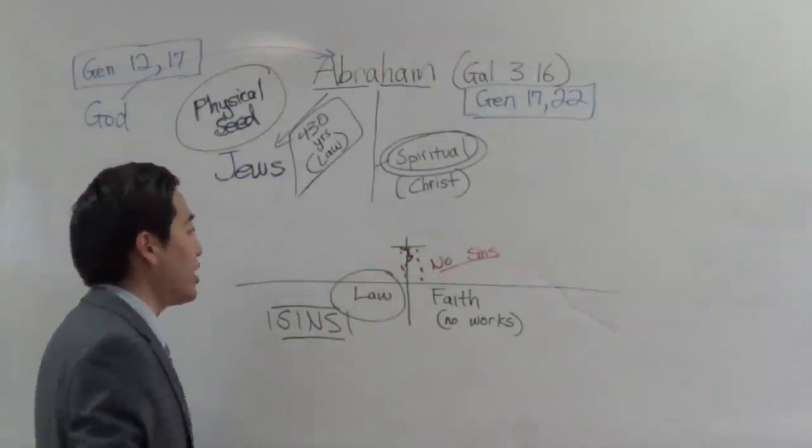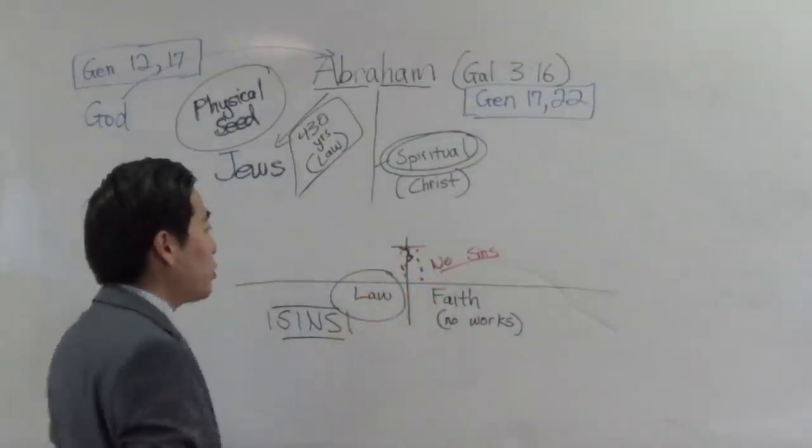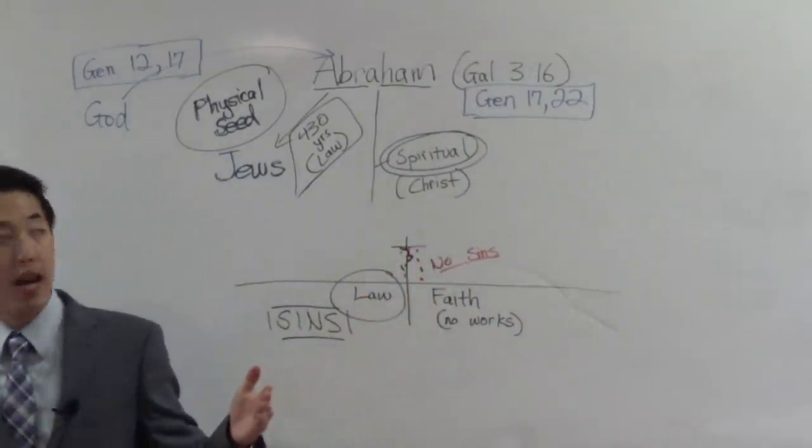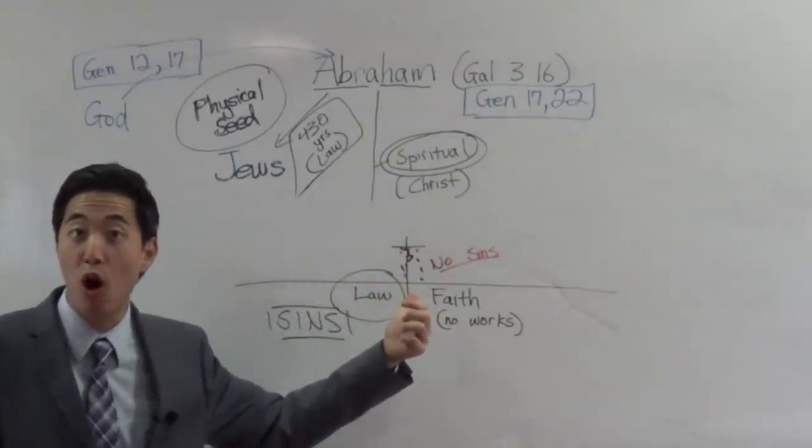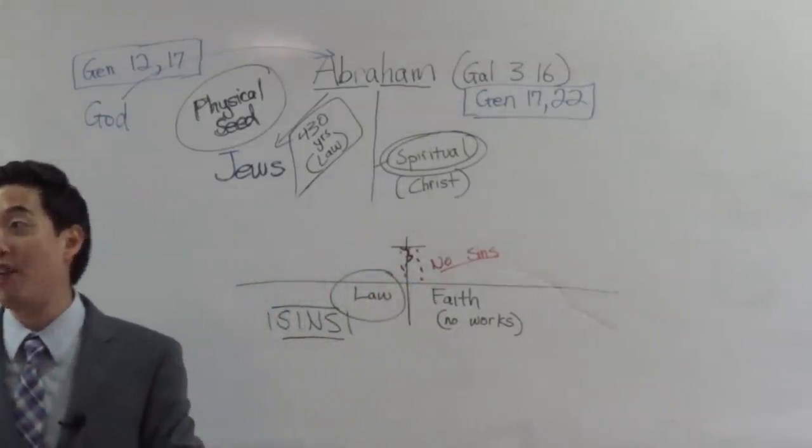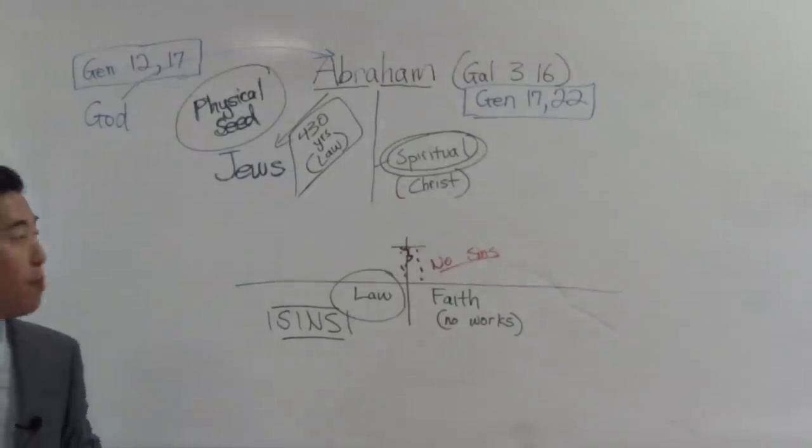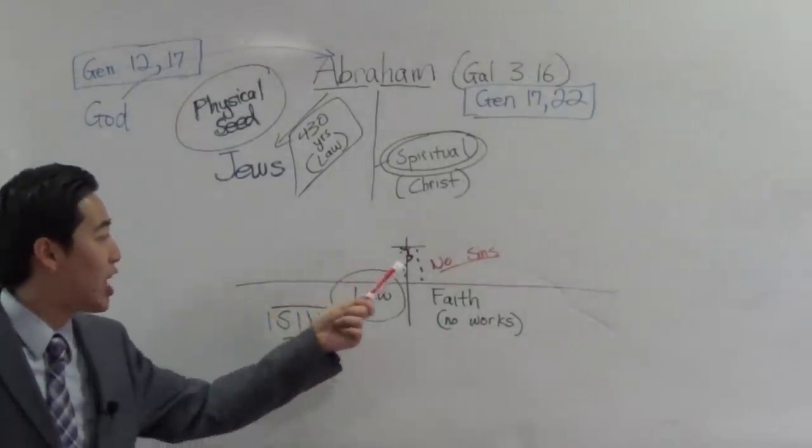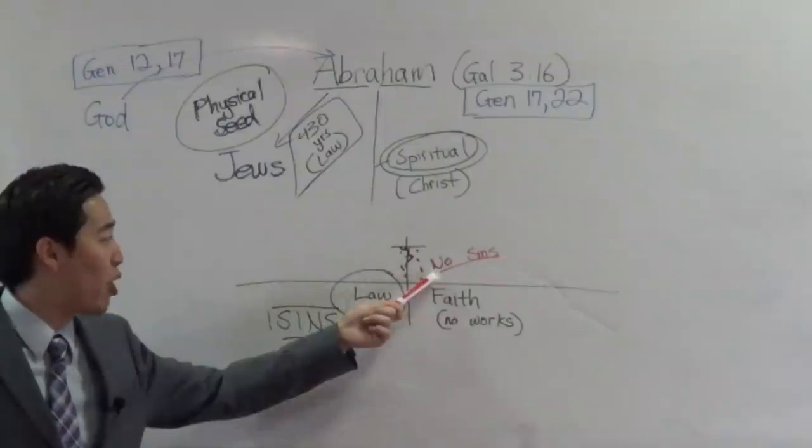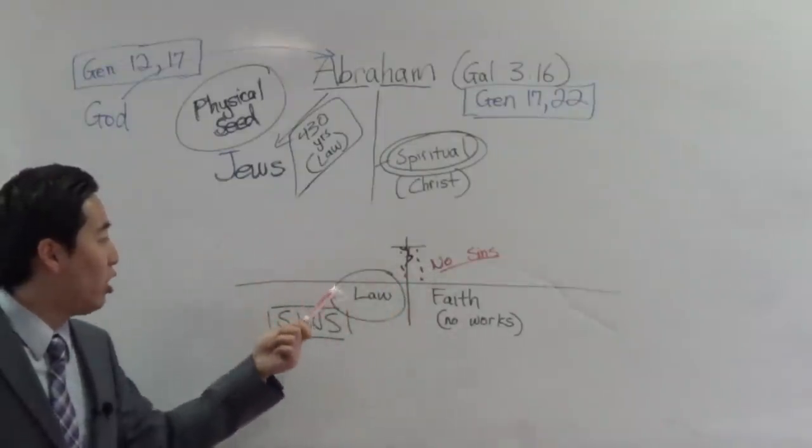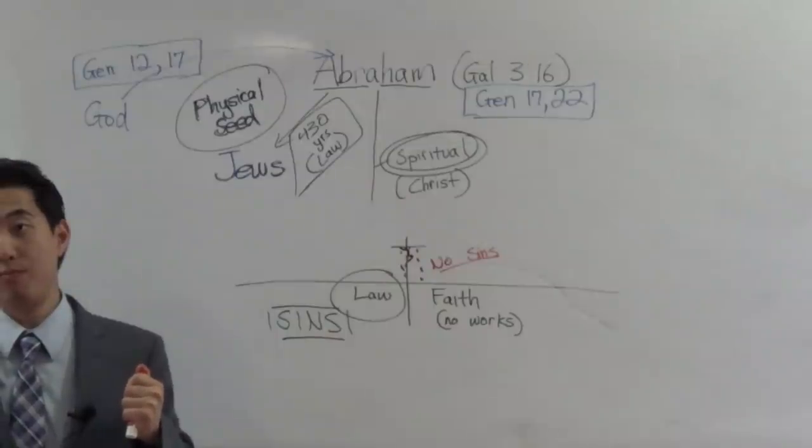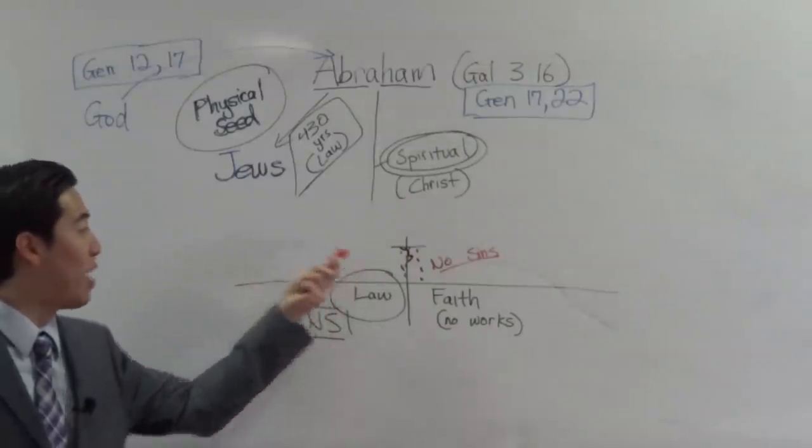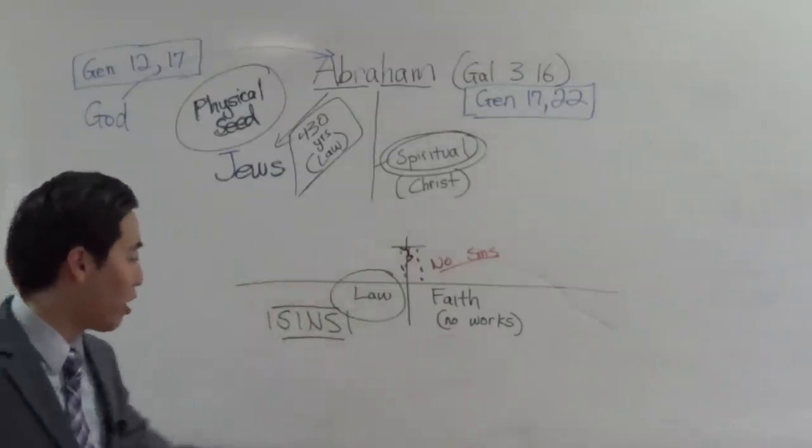So you got to realize this then. When anti-dispensationalists argue against... Well, no, the Old Testament saints, they did look forward to the cross. They somehow received salvation by faith, not by works. But the problem is this: the verse says the verse pointed out right here that the law was there till the seed should come. That's the problem. What are you going to do about this then?